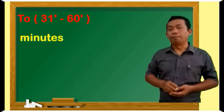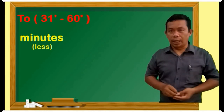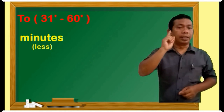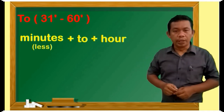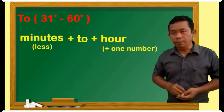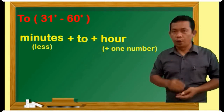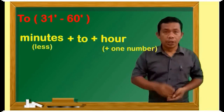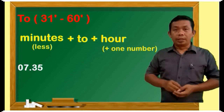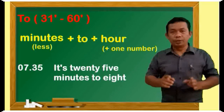Menit yang kita sebutkan di dalam 'to' adalah menit yang kurang — berapa menit lagi dia sampai ke menit ke-60. Sedangkan untuk jamnya, yang kita sebutkan adalah jam yang tertera tersebut ditambahkan dengan 1. Sebagai contoh, jam 7.35 — we can say 'It's 25 minutes to 8.'